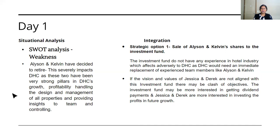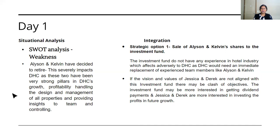Another example: you'll need to know the case in detail, but a few key facts are that there were two founding members of DHC — Alison and Kelvin — who decided to retire. This severely impacts the company because they were very strong contributors to growth and profitability. Kelvin was an architect who managed the unique designs and construction of all properties, while Alison managed all the hotels, customer service, and operations. These two significant board members are leaving, and the strategic option given is that their shares would be sold to a different investment fund.